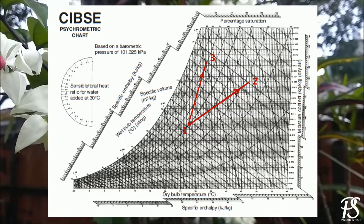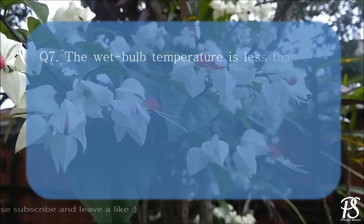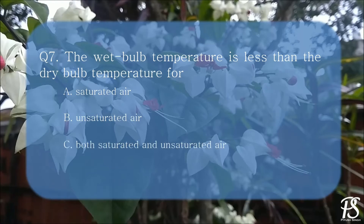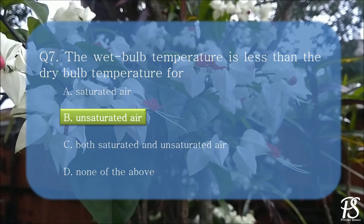Whether the relative humidity will increase or decrease depends on the sensible heat factor. For a process with a higher sensible heat factor, the relative humidity decreases. Whereas for a process with a low sensible heat factor, the relative humidity increases, because in that case the humidification process is more dominant. Regarding Question 7: the wet bulb temperature is less than the dry bulb temperature only for unsaturated air. As already discussed, at saturation, both dry bulb and wet bulb temperatures are equal.